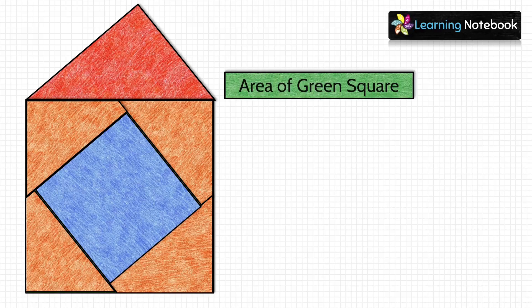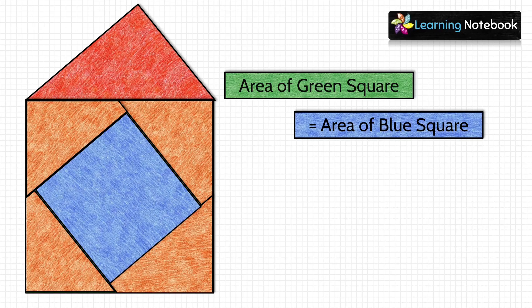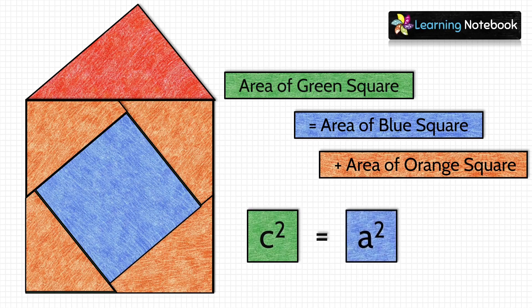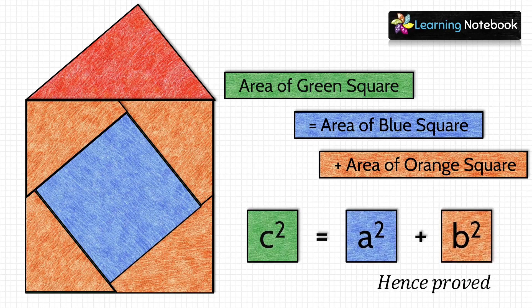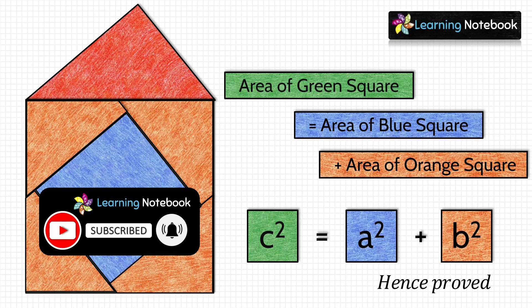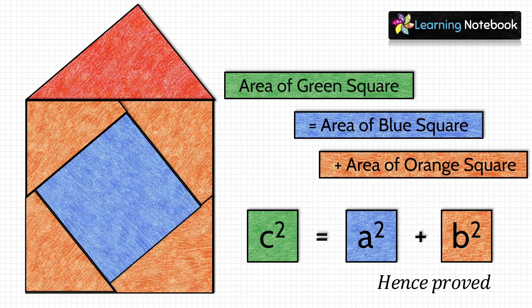Therefore, area of green square = area of blue square + area of orange square. Area of green square is C², area of blue square is A², and area of orange square is B². So we have proved that C² = A² + B². This was our activity to prove the Pythagoras theorem. Do try this activity to learn maths in a fun way. You can check out our channel Learning Notebook for more such videos. Thanks for watching. See you in the next video. Bye-bye.